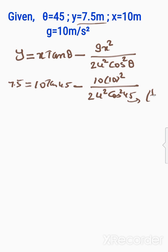Cos 45° is 1 by √2, so when squared it becomes 1 over 2, and that 2 cancels with the 2 in the denominator. So 7.5 equals 10 tan 45° which is 1, minus 10² which is 100, times 10 which is 1000, divided by 2u².